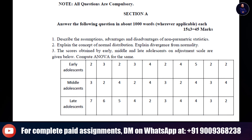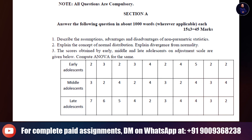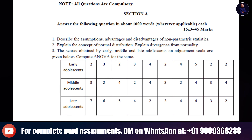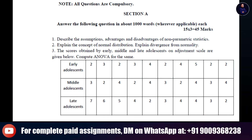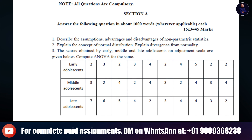3. The scores obtained by early, middle, and late adolescence on the adjustment scale are given below. Compute ANOVA for the same. Table is given below.